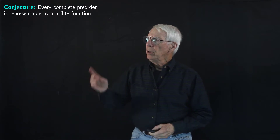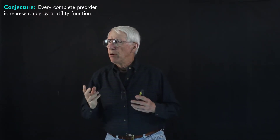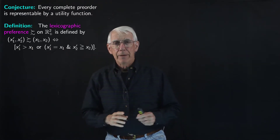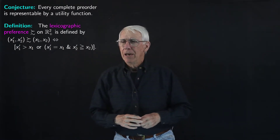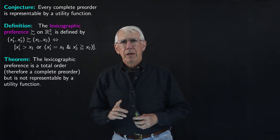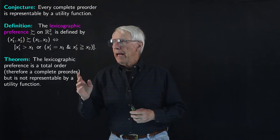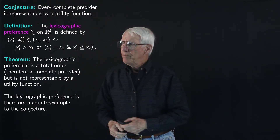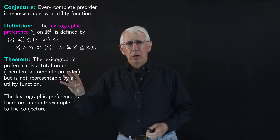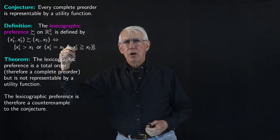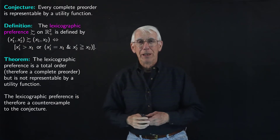In a previous lecture, we conjectured that every complete pre-order is representable by a utility function. Then we defined this lexicographic preference, and presented a theorem saying the lexicographic preference is a complete pre-order — in fact, a total order — but it's not representable by a utility function. So the lexicographic preference is a counterexample showing that the conjecture is false: it's not true that every complete pre-order is representable by a utility function.